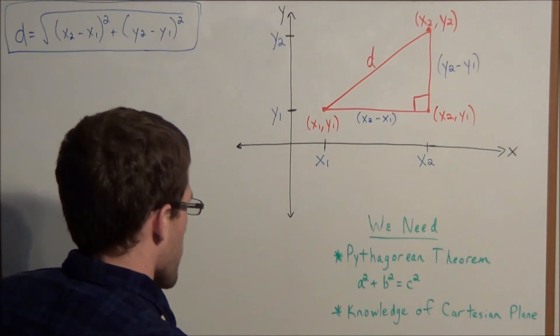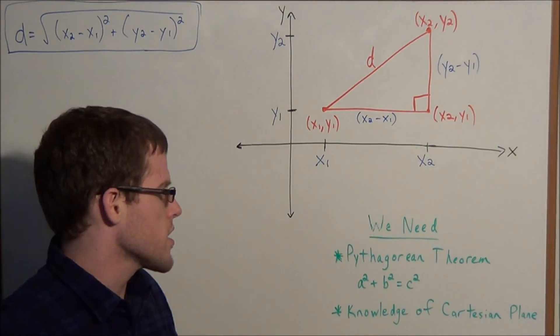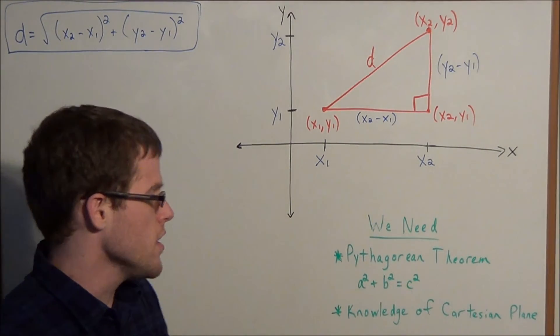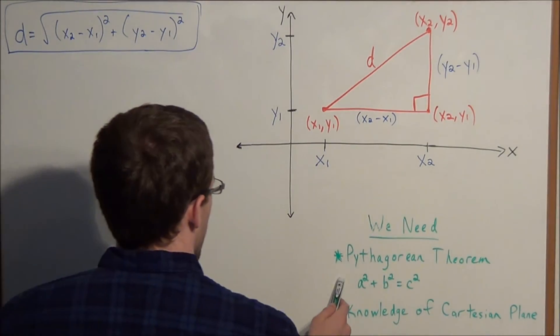So we could use the Pythagorean Theorem. Which states if we have a right triangle with side lengths or leg lengths a, b and hypotenuse c, we could set up the equation a squared plus b squared equals c squared.